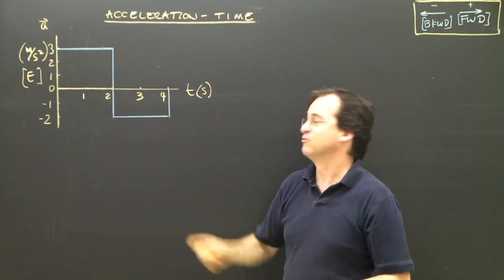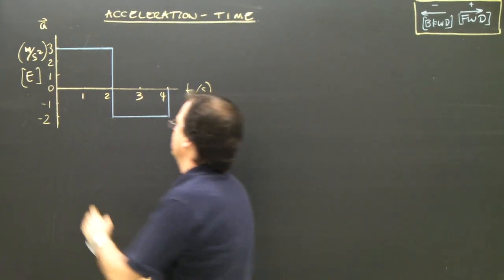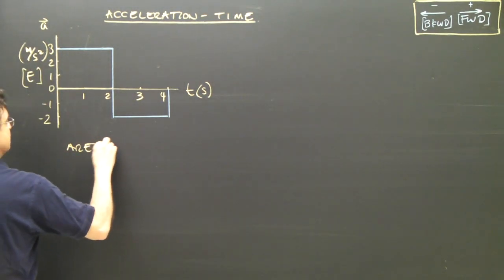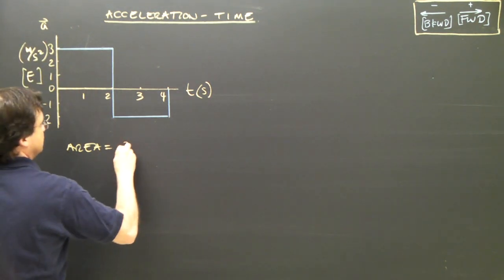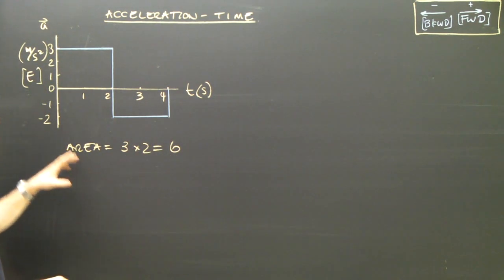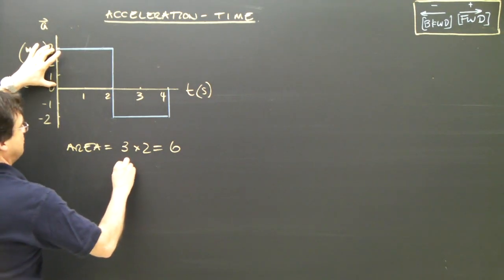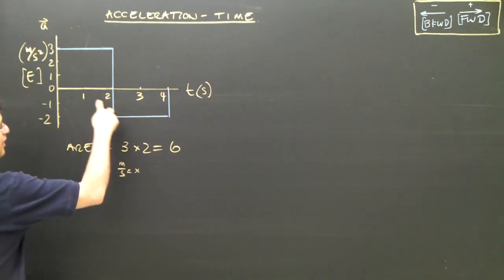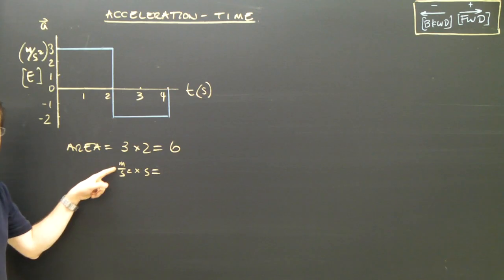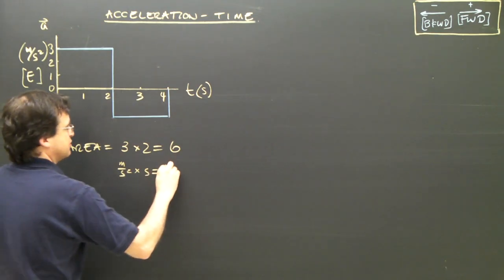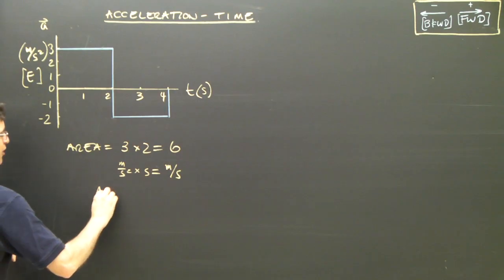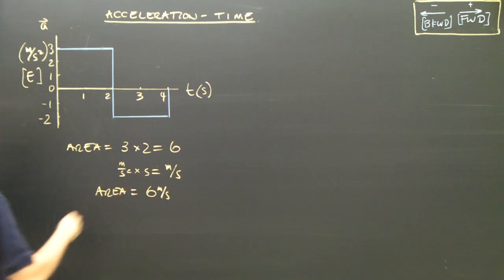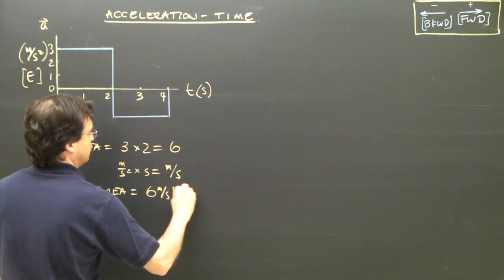Let's look at the area. The area of this shape is base times height. So the area here is equal to three times two, which is six. Let's look at the units: this is three meters per second squared, and this base is seconds. So meters per second squared times seconds gives us meters per second. So the area for the first part is six meters per second — it's positive, so that would be forward or east.